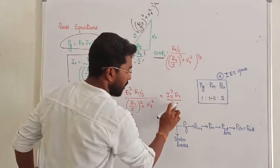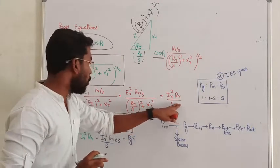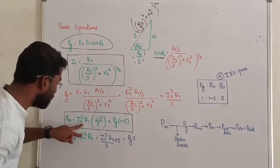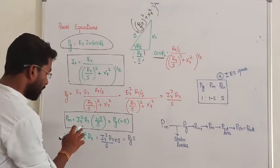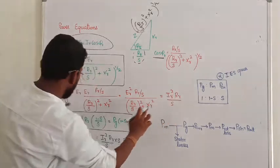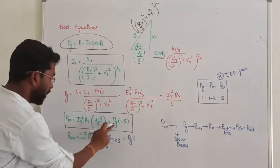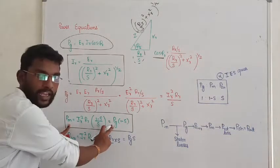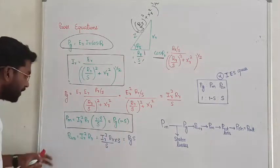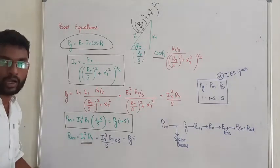So, I_R squared into R_R divided by S. This is how we calculate I_R squared. Once we know I_R squared, we can easily calculate the mechanical power. Mechanical power: if we compare, I_R squared into R_R by S — we can substitute. So mechanical power, if you know the value of air gap power, becomes air gap power into 1 minus S. Similarly, rotor copper loss equals I_R squared into R_R.